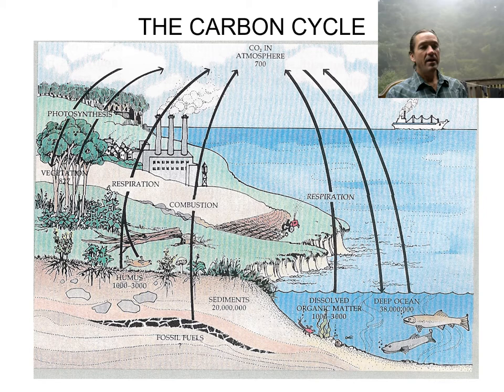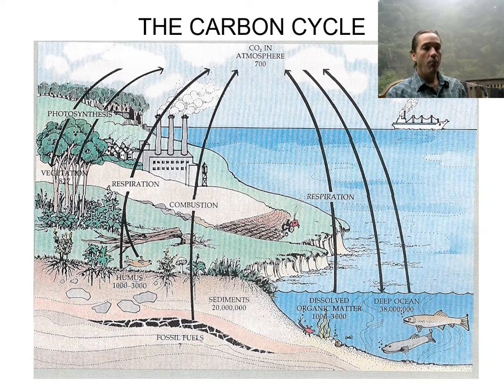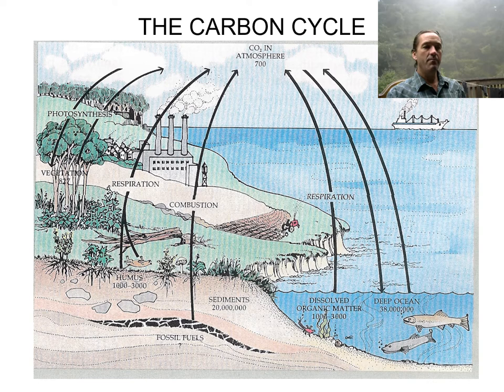Today we're going to talk about the carbon cycle. A lot of times when we talk about the carbon cycle, we use a cartoon that shows arrows depicting which way carbon is moving through the hydrosphere, atmosphere, and the biosphere. But we're not getting the full picture, and that's where the box models covered in the last lecture will come into play.